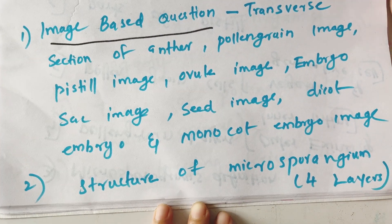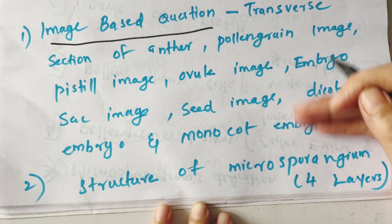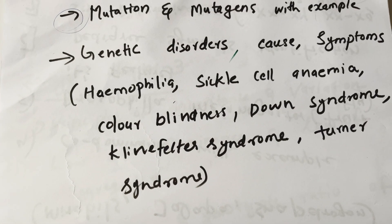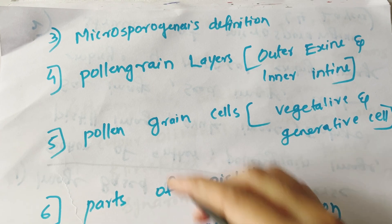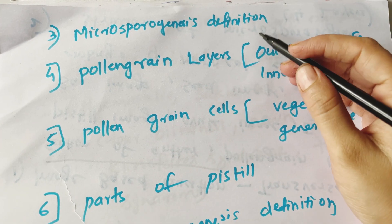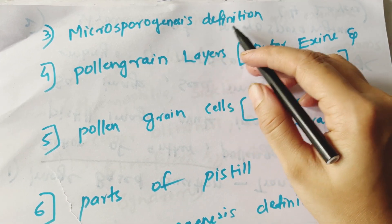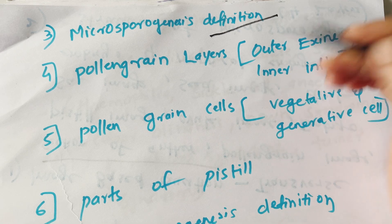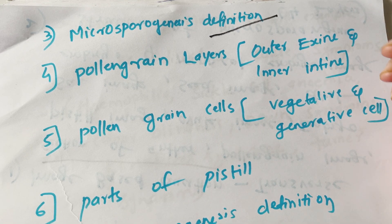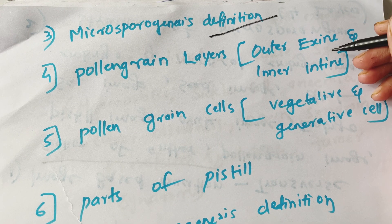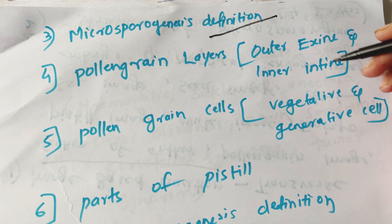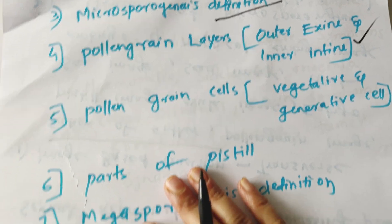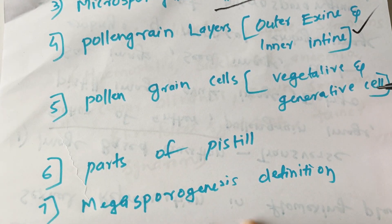Structure of Microsporangium — its four layers. Then, Microsporogenesis definition. Pollen grain layers: outer exine and inner intine. Pollen grains contain vegetative and generative cells.